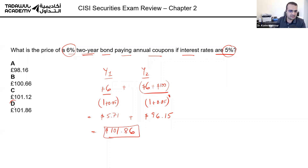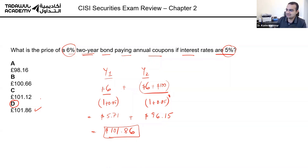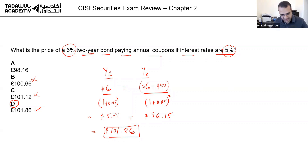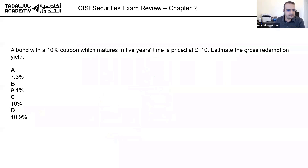The answer is D. Nobody got it right — half said B and the other half said C. You should learn from the mistakes. Moving on to question number two.